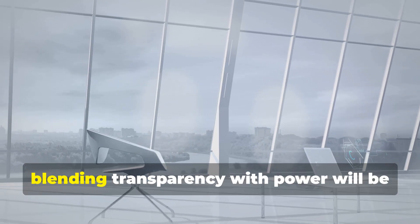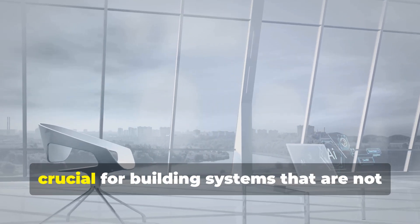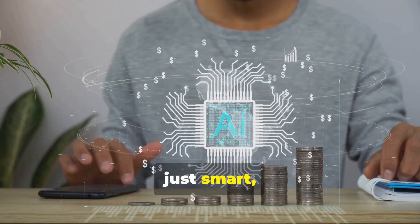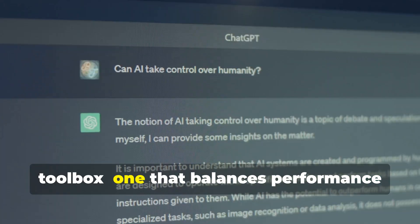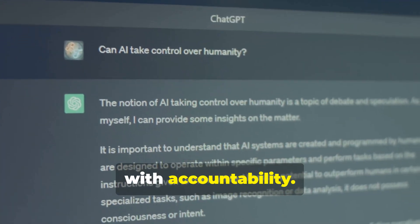As AI evolves, blending transparency with power will be crucial for building systems that are not just smart, but trustworthy. The future of explainable AI is a diverse toolbox, one that balances performance with accountability.